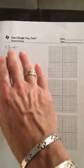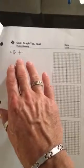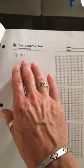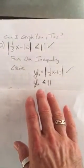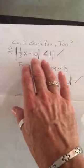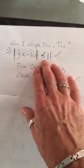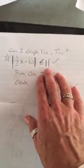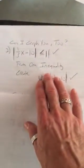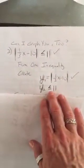In this video, we're going to look at number 2. Number 2 says the absolute value of 1 third x minus 10 is less than or equal to 11. In the packet, it demonstrates that to use this graphing calculator, we're going to take the inequality statement and from that one inequality statement, we're going to create two other statements.